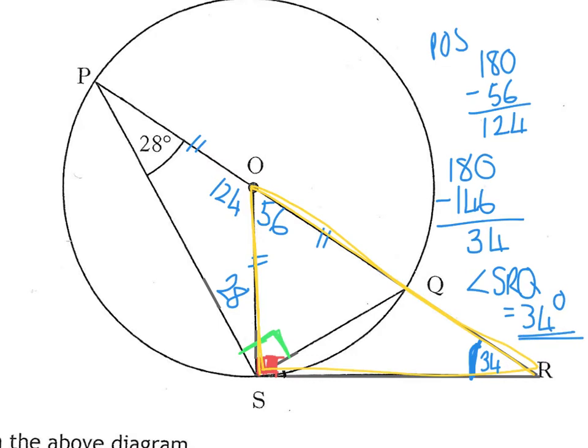So angle SRQ is what they gave us, equals 34 degrees. I could have also got these other angles. So using this green right angle, 90 take away 28 is 62. Using symmetry, that's also 62, which makes that 118 on a straight line. 90 take away 62 is 28. So I could have also used 28, 118, which adds to 146. Take that away from 180, it gives you 34 as well.